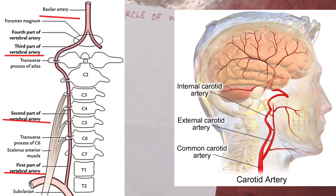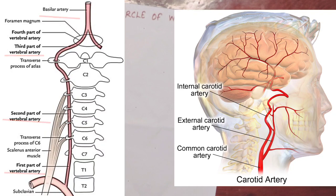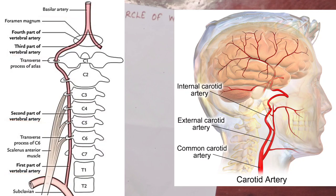There are two posterior arteries, which are vertebral arteries. The vertebral artery passes through the transverse foramen of the cervical vertebrae. These two vertebral arteries join to form what is called the basilar artery.